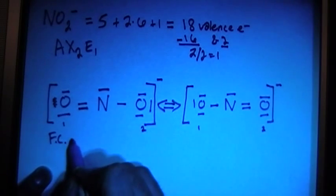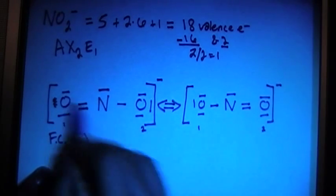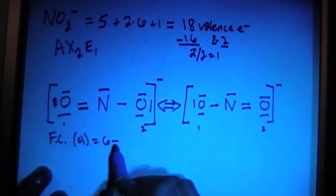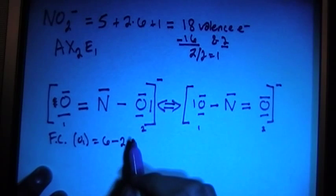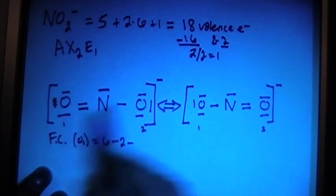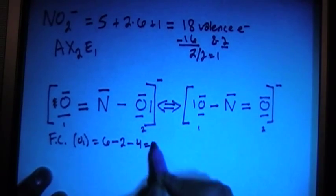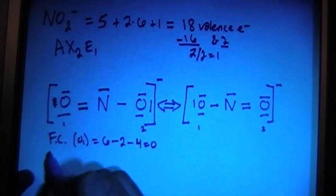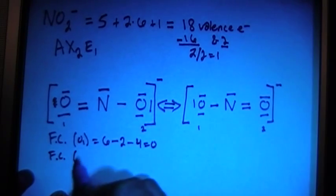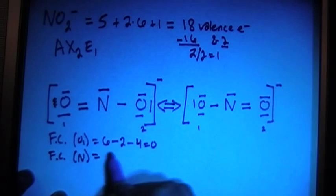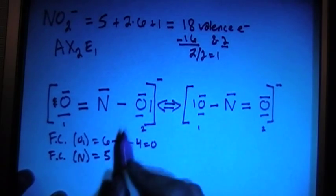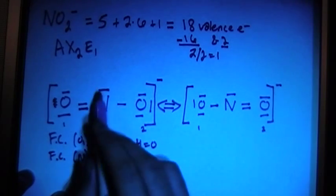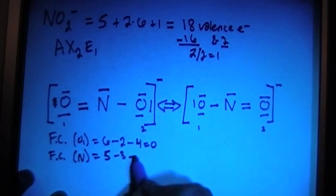So oxygen 1 on the first one here, formal charge is 6 minus the number of bonds is 2, minus the number of non-bonding electrons is 2 and 4, so that's 4, so that's 0. Formal charge on the nitrogen is going to be 5, 5 valence electrons, minus 1, 2, 3 bonds, minus the 2 non-bonding, so that's minus 2, 0.